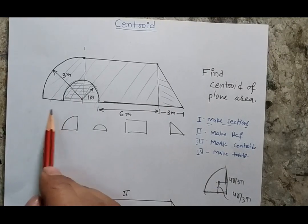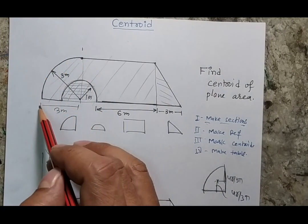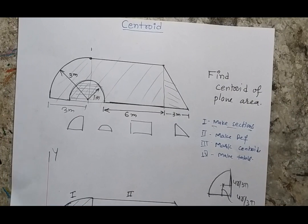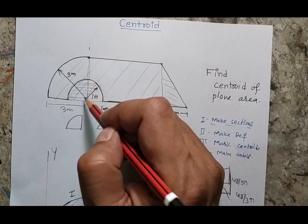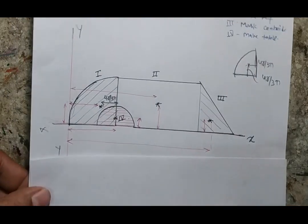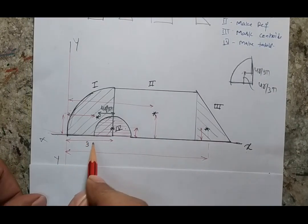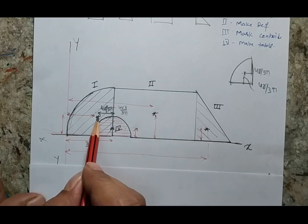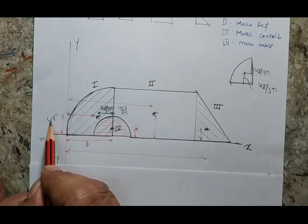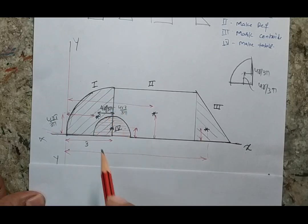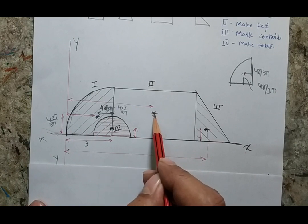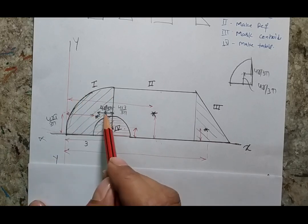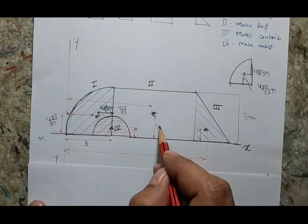In my question, the radius of this one-quarter circle is given — please note this is not a semicircle, it is a one-fourth or quarter circle, and the other one is a semicircle. The radius is given as 3 meters, so this distance is 4×3/(3π). The total height from the reference is also 3 meters, so the centroid height is 1.5 meters.